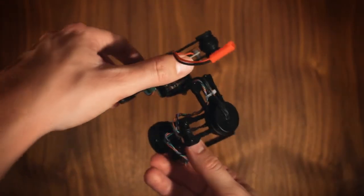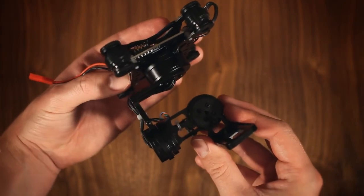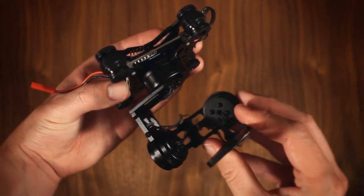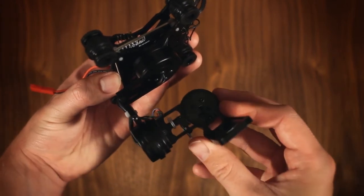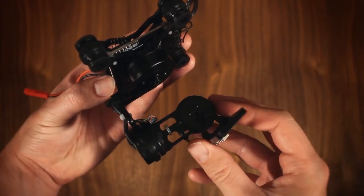At least in this context, a gimbal refers to a motorized stabilization and anti-vibration device designed to keep the camera level. I'm using a 3-axis gimbal, meaning it can stabilize the pitch and roll as well as yaw axis.